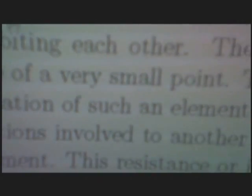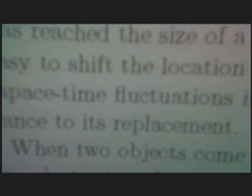Thus, an entity emerges that consists of photons orbiting each other. The radius of this rotating object is ever shrinking until it has reached the size of a very small point. This entity is then called an elementary particle. It is not easy to shift the location of such an elementary particle, since such a shift requires the shift of all the space-time fluctuations involved to another place. Hence, the elementary particle has a natural resistance to its replacement.